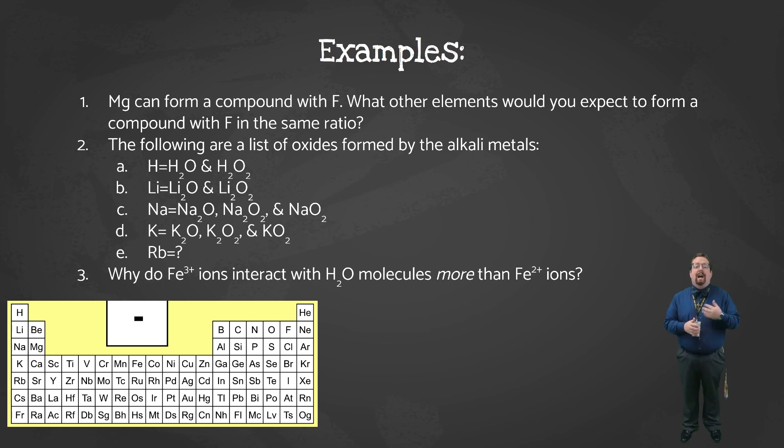Question two gives you a list of different oxides or oxygen compounds that alkali metals make. Hydrogen makes H2O and H2O2. Lithium makes Li2O and Li2O2. Sodium makes Na2O, Na2O2, and NaO2. Potassium makes K2O, K2O2, and KO2. If you look at that closely enough, you might notice a trend. So based on that information, what oxides would you expect rubidium to make? I'd say that rubidium should make similar oxide compounds as sodium and potassium do. So Rb2O, Rb2O2, and RbO2.